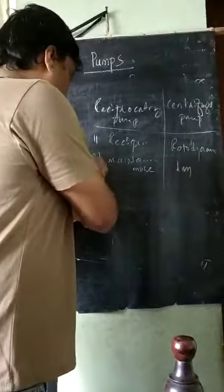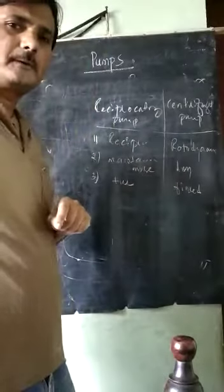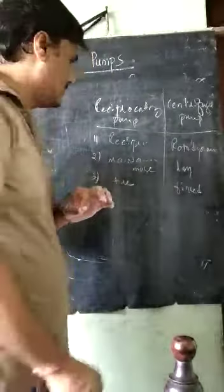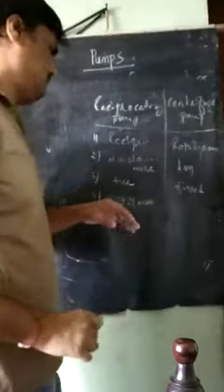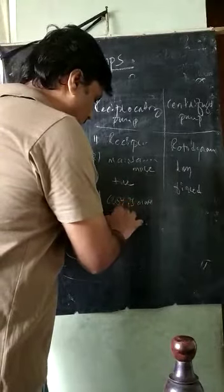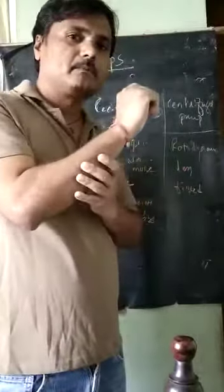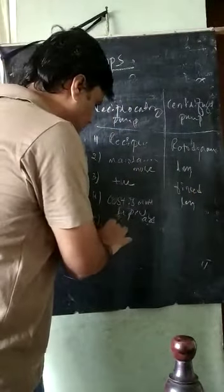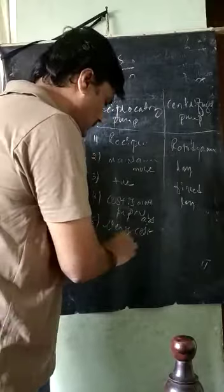Third, the reciprocating pump is a positive displacement machine, while the centrifugal pump is a fixed displacement machine. Fourth, regarding cost per unit power absorption, the reciprocating pump costs more. In terms of power absorption, the reciprocating pump absorbs more power while the centrifugal pump absorbs less.